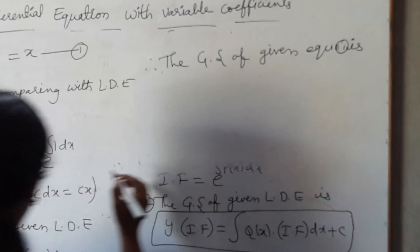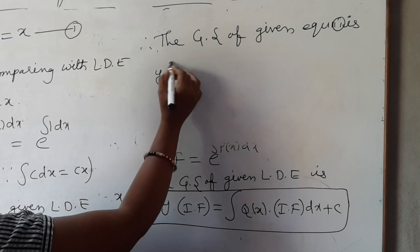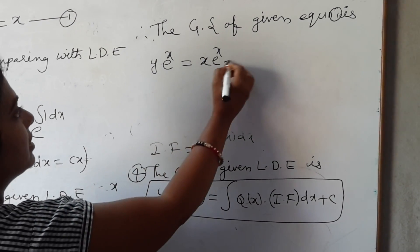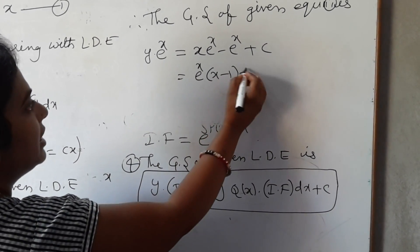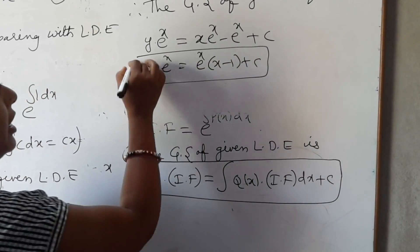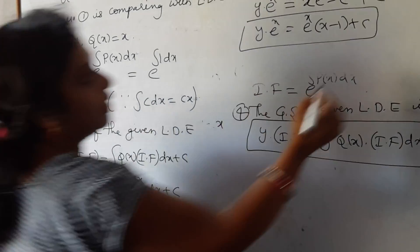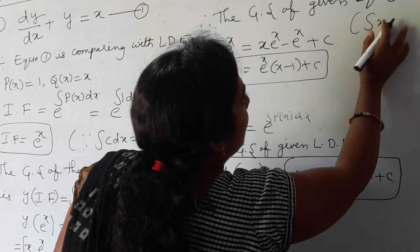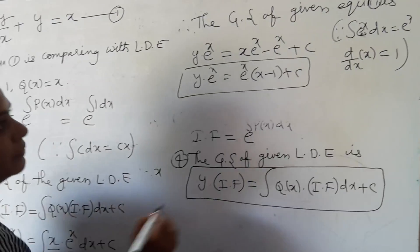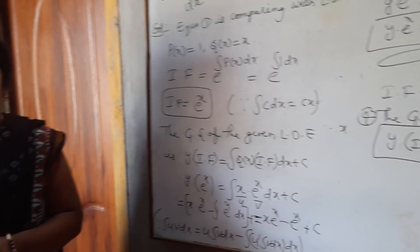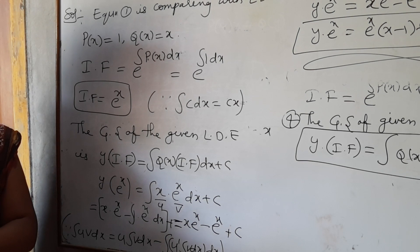Therefore, the general solution of equation 1 is y times e^x equals x·e^x minus e^x plus C, which can be written as e^x times (x minus 1) plus C. This is the solution of the given differential equation which is in linear form. Here, the integral of e^x dx is e^x, and the derivative of x equals 1.